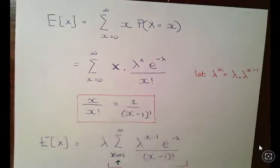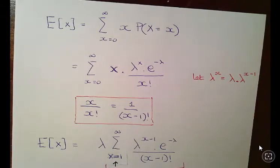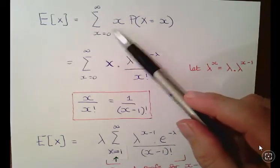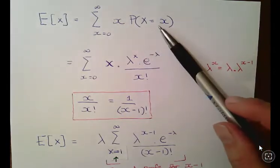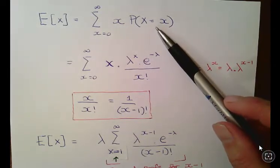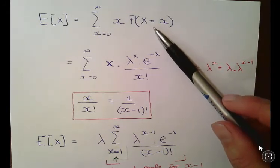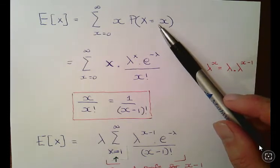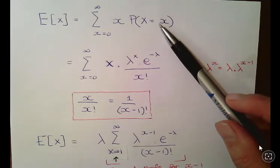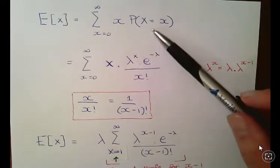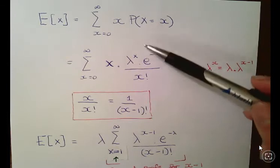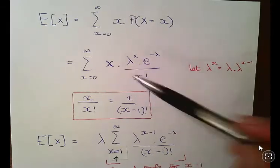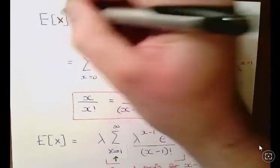Now, the expected value of x is the summation of x times the probability mass function — the probability that capital X equals x. I deliberately use this notation to emphasize the correspondence, as that becomes important for something I'll explain shortly. Note that should be capital X — it's just a little hard to read when handwriting everything.